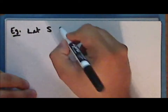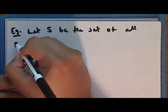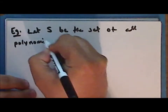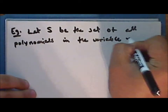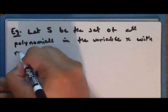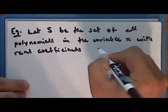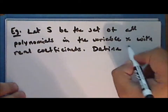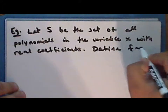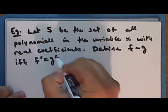So let's look at an example. Let S be the set of all polynomials in the variable X with real coefficients. Define a relation as follows: F is related to G if and only if the derivative of F is equal to the derivative of G.